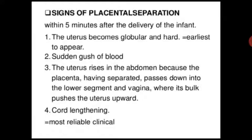Signs of placenta separation: within five minutes after the delivery of the infant, the uterus becomes globular and hard — this is the earliest sign to appear. Then there is a sudden gush of blood. Then the uterus rises in the abdomen because the placenta, having separated, passes down into the lower segment and vagina, pushing the uterus upward.